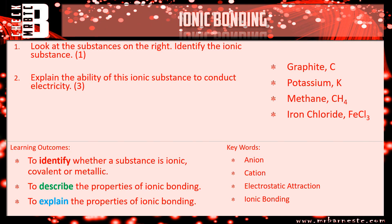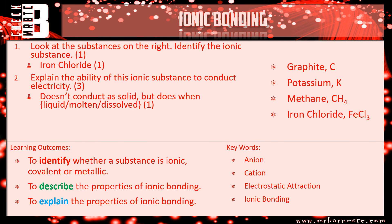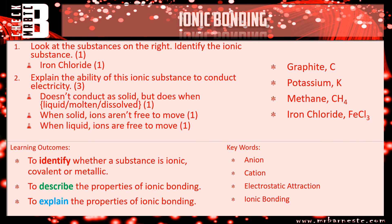Question one: identify the ionic substance. The only one in there that's got a metal — iron — and a nonmetal — chlorine — is iron chloride, for your first mark. Question two: explain the ability of this substance to conduct electricity. First, you need to say it cannot conduct when solid, but can when liquid, molten, or dissolved — any of those for your first mark. Then you need to explain why. As a solid, it can't conduct because the ions are not free to move. When liquid, molten, or dissolved, those ions are free to move and can pass on that charge. Three sentences, three small comments, three easy marks in your exam — provided you know you have an ionic compound.